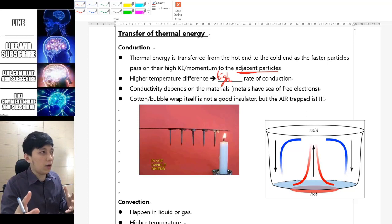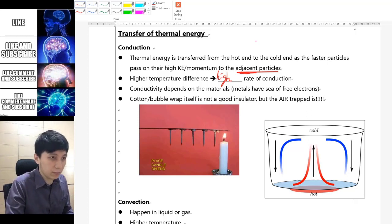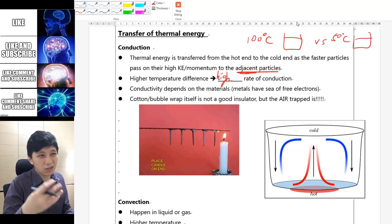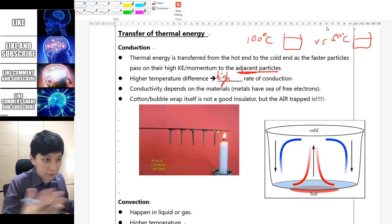So obviously when you put two objects of greater temperature together, for example if you're putting 100 degrees Celsius of water into a cup versus maybe 50 degrees Celsius of water into a cup, of course the cup will get so much hotter for the 100 degrees Celsius. So that is a very simple idea.